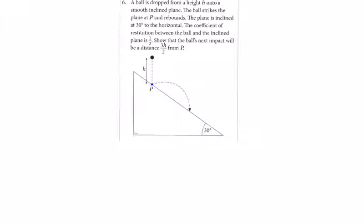The ball is being released from rest. We can find its velocity because we know the acceleration is g and the distance of travel is h. Using v² = u² + 2as, we get v² = 2gh, so the velocity is the square root of 2gh.